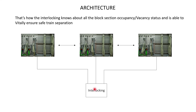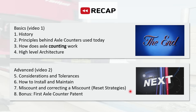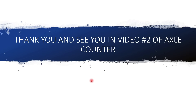That's how the interlocking — the brain that ensures vital, safe train separation — knows which track section on the line is occupied and which is vacant. Based on that, it decides whether to set or release a route. On a high level, that's how an axle counter architecture works. So today we discussed the history, the principles behind axle counters, how axle counters work, and the high-level architecture. Thank you all — I'll see you in video number two of axle counters. Take care.